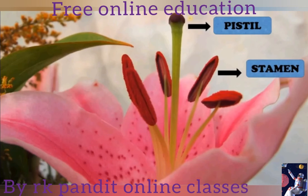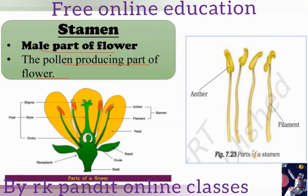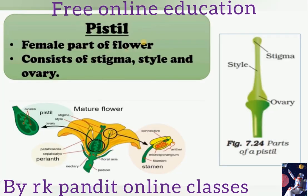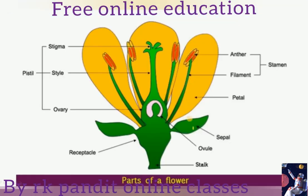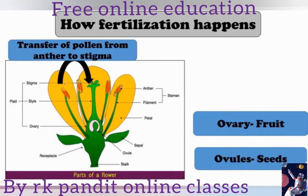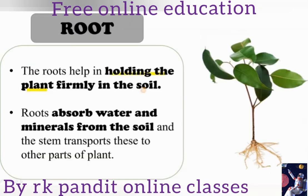The pistil is the female part of the flower. The stamen is the male part of the flower, and it contains pollen grains. The pistil consists of stigma, style, and ovary. When you cut open the ovary you can find ovules inside. Transfer of pollen grains from the anther to the stigma occurs during pollination. The ovary then turns into the fruit, and ovules turn into seeds.